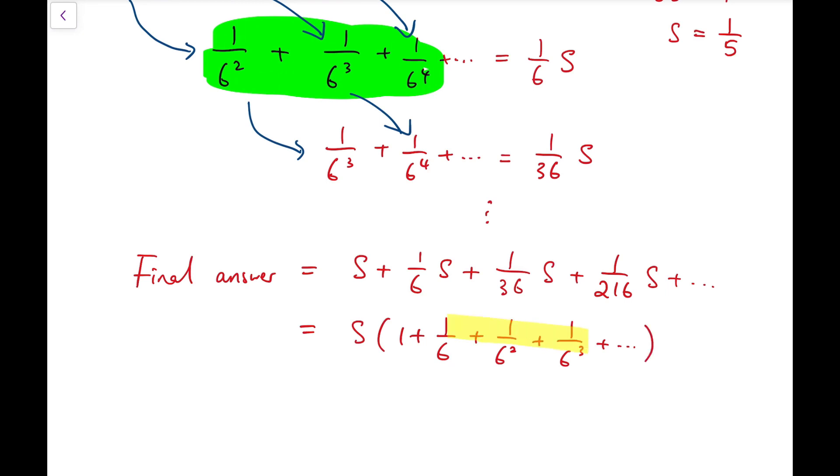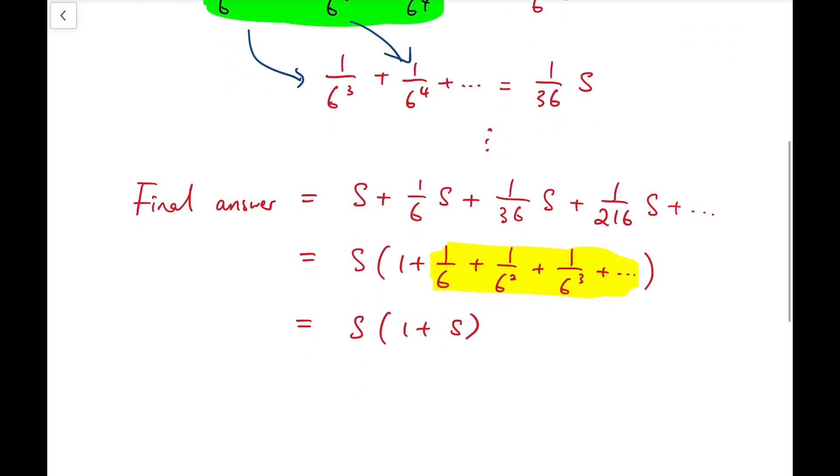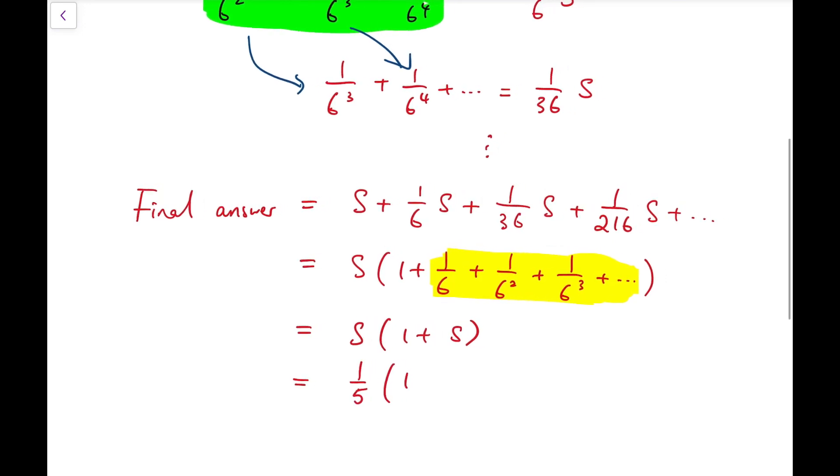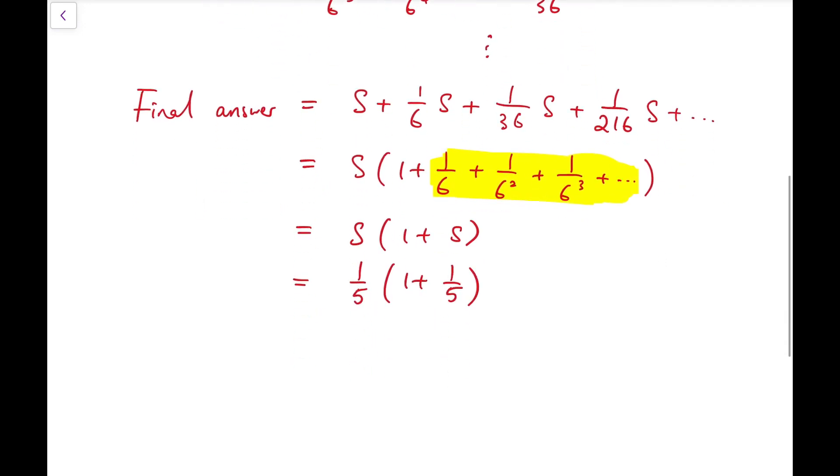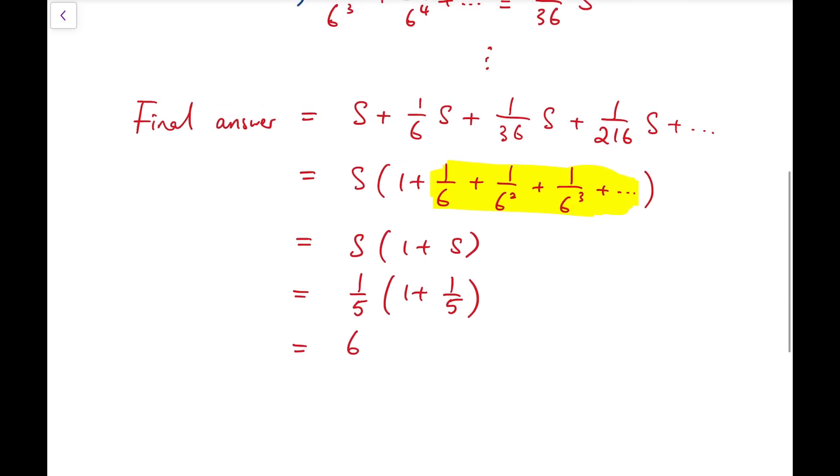And recalling that the infinite series excluding the 1, is in fact s again. So we have s times 1 plus s. And because, recall that s is 1 fifth, it's at the top right corner of the screen. So then, our final answer is 1 fifth times 1 plus 1 fifth, and it's actually 6 over 25. This is our final answer.